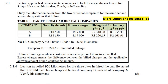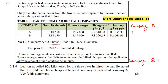Moving on: Lection traveled 950 kilometers for the three days that he hired the car. He stated that it would have been cheaper if he used Company B instead of Company A. For five marks, verify his statement. So what we're going to do is look at Company A and then Company B, and see how much each one would have cost. If he uses Company A, he's going to pay this amount here, plus...